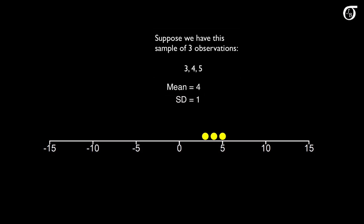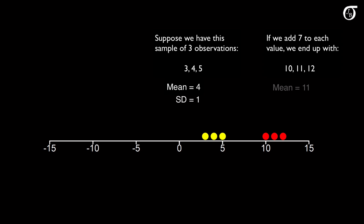Now what happens if we add a constant to each of these three values? If we add 7, for example, we end up with the values 10, 11, and 12. The yellow dots represent the original observations, and the red dots represent the values after adding 7 to each one — we've shifted the values 7 units to the right. The new mean is 11, which is just the original mean shifted 7 units right. But the values have the same spread and variability; the standard deviation of 10, 11, and 12 is still 1.